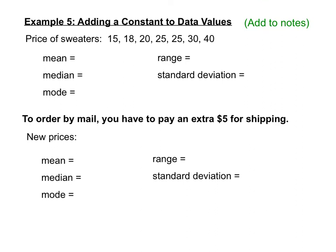Now let's look at what happens to measures of center and spread when we add a constant to all data values. Here are the prices of seven sweaters. The data is already in order, so the median is the middle number: 25. The mode is 25 — the only value that appears more than once. For the range: 40 minus 15 equals 25. We'll use Desmos to find the mean and standard deviation.